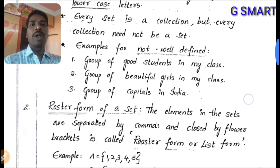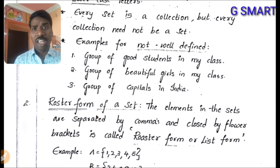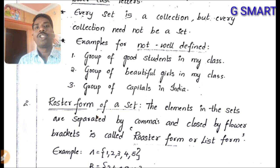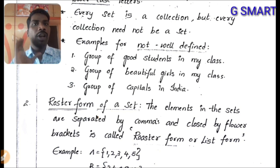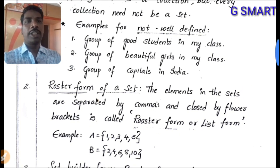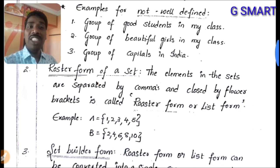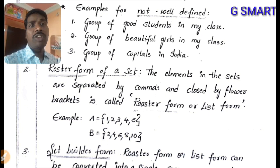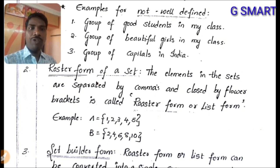Roster form of a set: the elements in the set are separated by commas and enclosed by flower brackets (curly braces). This is called roster form or list form. For example, {1, 2, 3, 4, 5} and B = {2, 4, 6, 8, 10}.